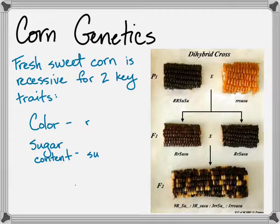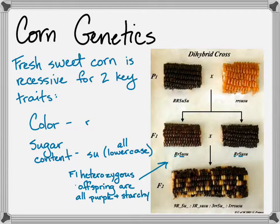We're using lowercase letters to represent these recessive traits. You can see that the heterozygous F1 generation offspring are all showing the dominant traits — both the purple color and the starchy sugar or carbohydrate content.